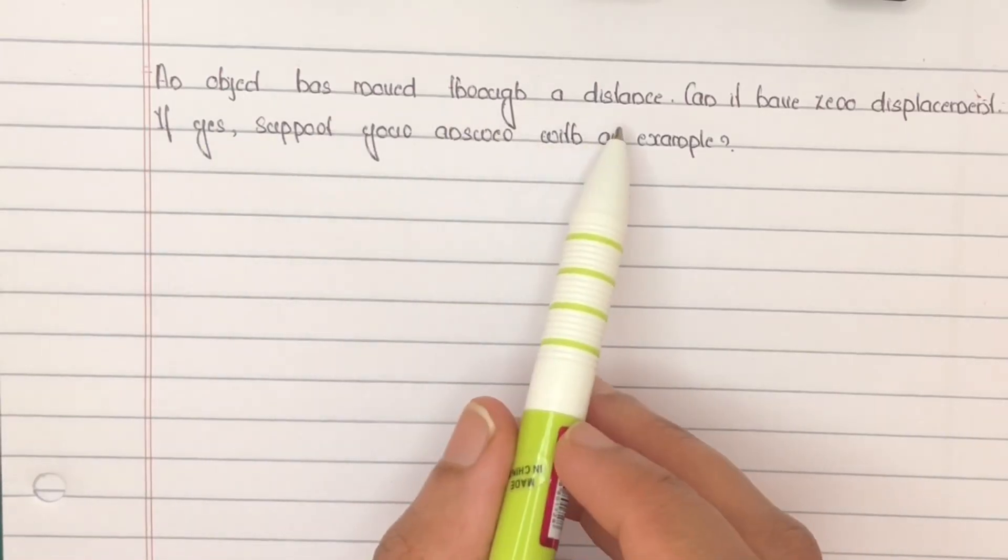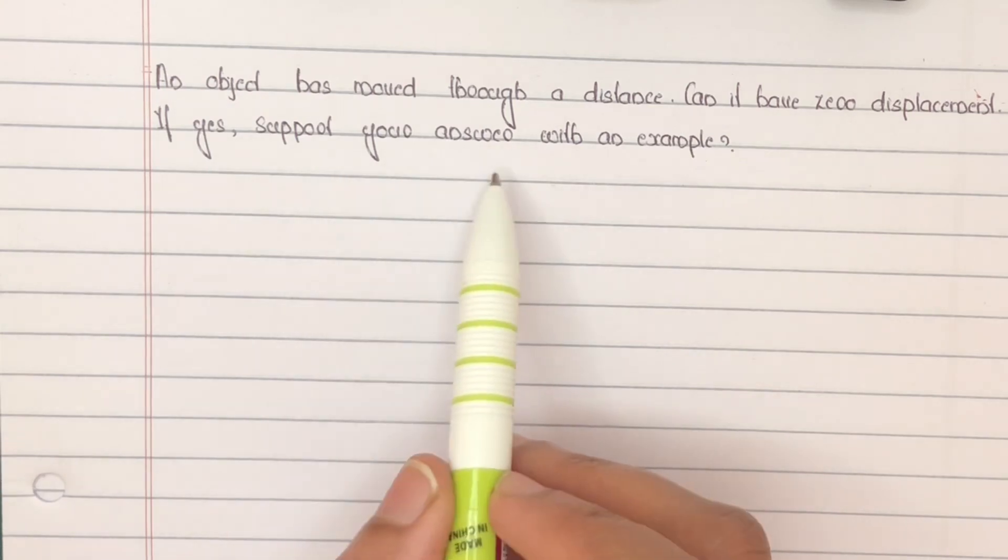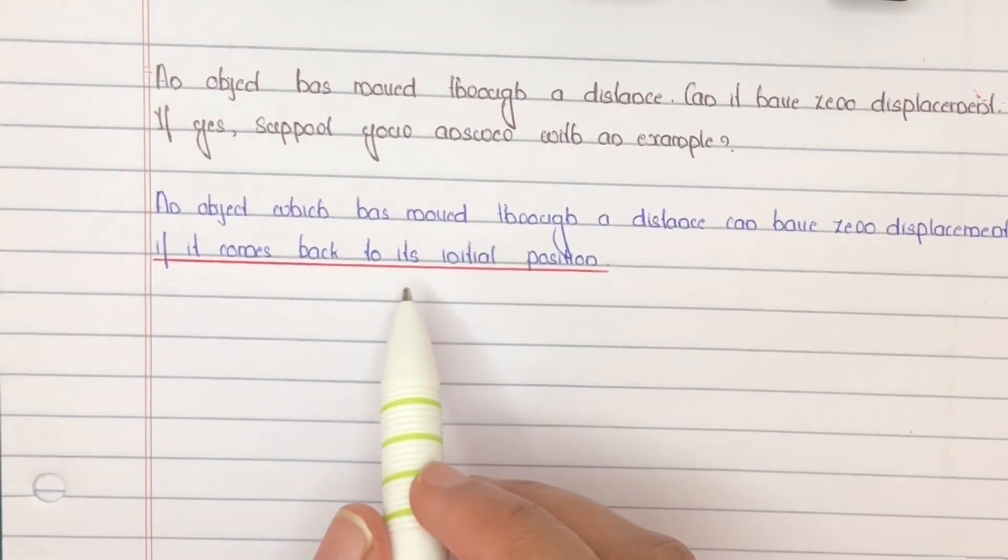An object has moved through a distance. Can it have zero displacement? If yes, support your answer with an example. For a journey, if its initial and final position are the same, then its displacement will be zero. Consider an example.